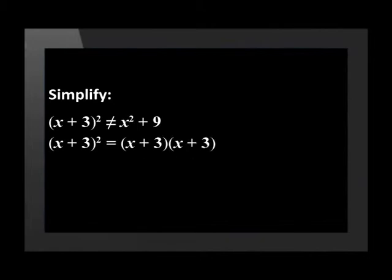Simplify: open brackets, x plus 3, close brackets, squared. This is an example of a squared binomial. Often people will make the mistake of only squaring the x and the 3. This is wrong because the square belongs to the entire bracket. We must multiply the bracket by itself.